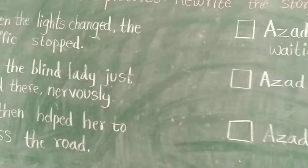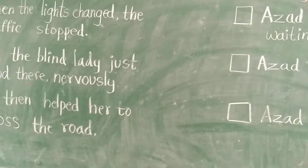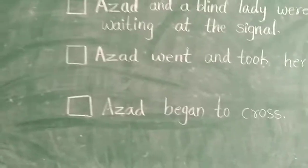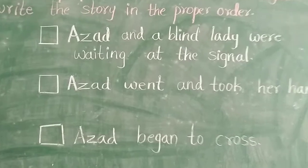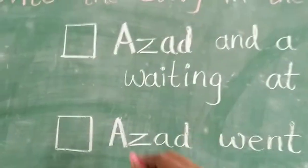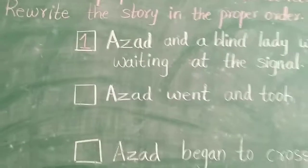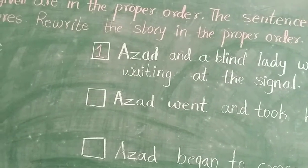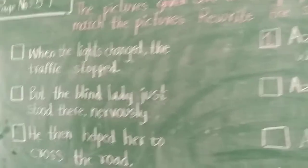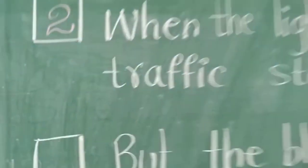We should rewrite the story in proper order. In the first picture you can see — Azat and a blind lady were waiting at the signal. This sentence will be the first sentence of the story. Next, what happened? When the lights changed, the traffic stopped. This is the second sentence.